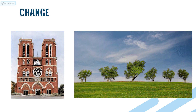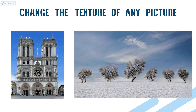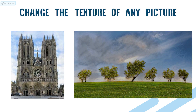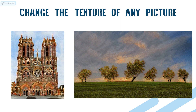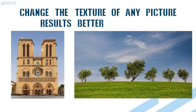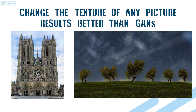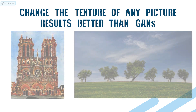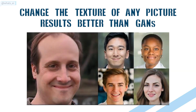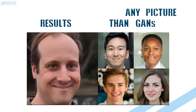This new technique can change the texture of any picture while staying realistic using completely unsupervised training. The results look even better than what GANs can achieve while being way faster. It could even be used to create deep fakes. Let's see how they did that and the amazing results.